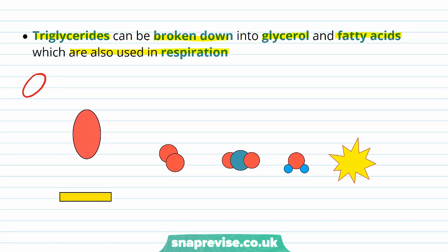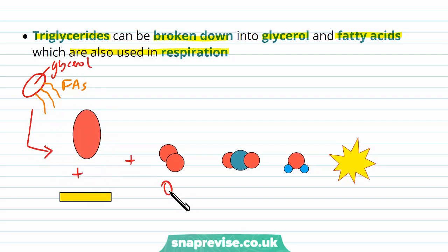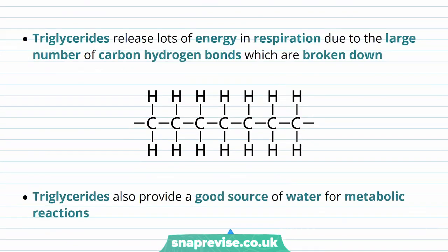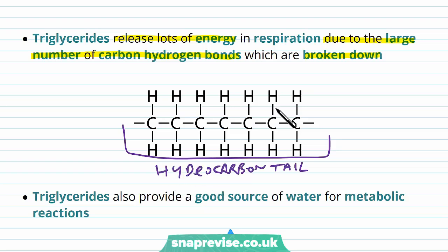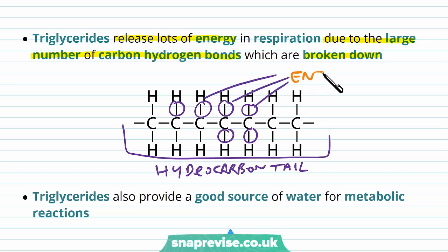The triglyceride molecule is made up of glycerol with three fatty acids. When broken down into its two components and reacted with oxygen, the same products are formed: CO₂, water, and ATP. Triglycerides in respiration release a lot of energy due to the large number of carbon-hydrogen bonds found in their fatty acid chains. As these bonds get broken, energy is released, which is then used to make ATP. Even in unsaturated or saturated cases, there are always many carbon-hydrogen bonds throughout the fatty acid tail.